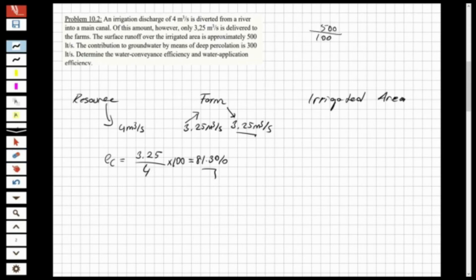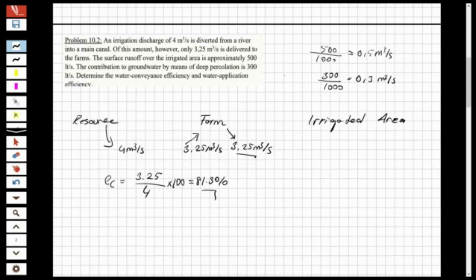And it says that the contribution to groundwater by means of deep percolation is 300 liter per second, so 300 over 1000, this will be equal to 0.3 meter cubic per second. And these are the losses, because the surface runoff, it's just the flow above the ground, so we don't take any benefits from that water. And the contribution of the groundwater, deep percolation means that the water reaches the groundwater, so we also don't use it. So these are the losses.